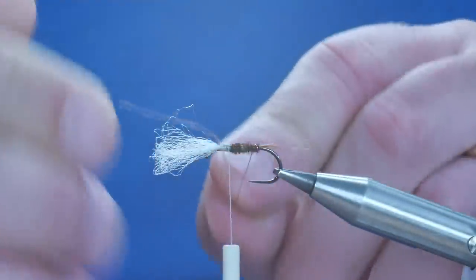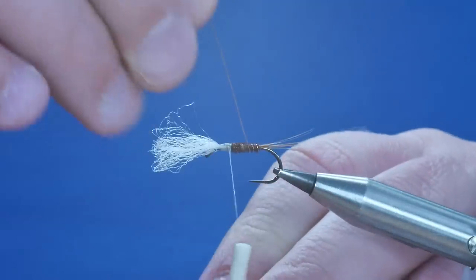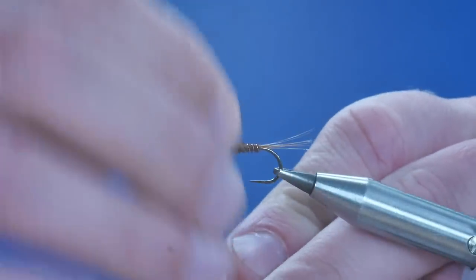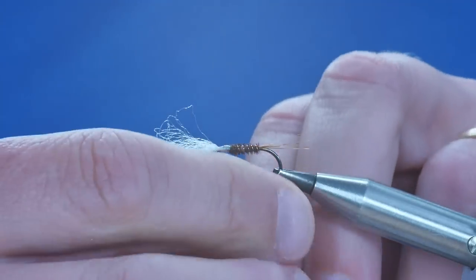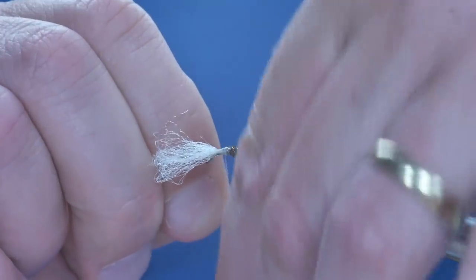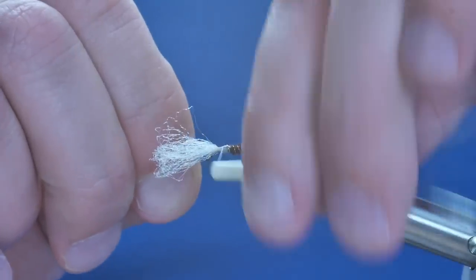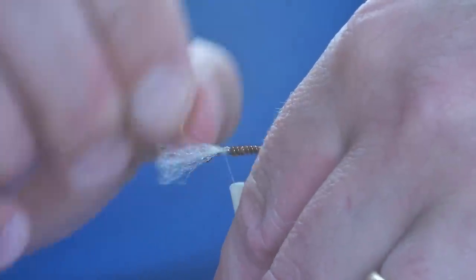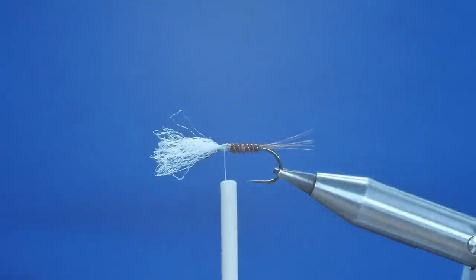Okay, so now I'm going to bring my rib up in the opposite direction to the way I laid down my pheasant tail fibers. And the rib serves two purposes. It looks like the segmented body parts of a buzzer, and it also protects your pheasant tail fibers that are in the body. So I've caught that in, just twisted away my wire rib.